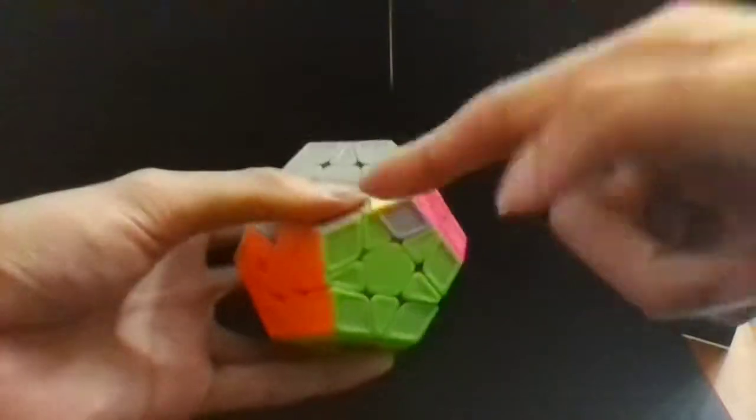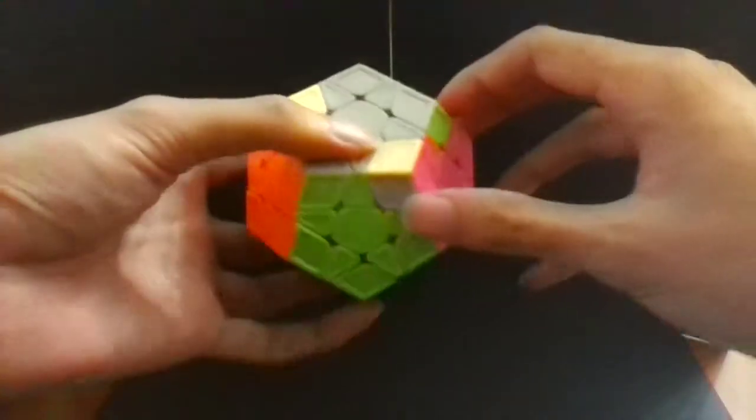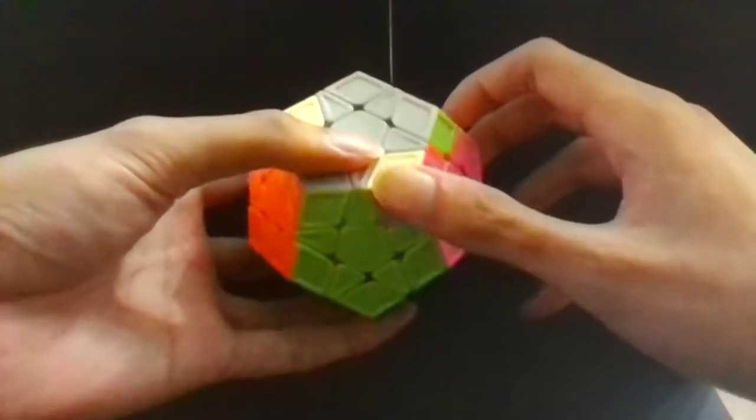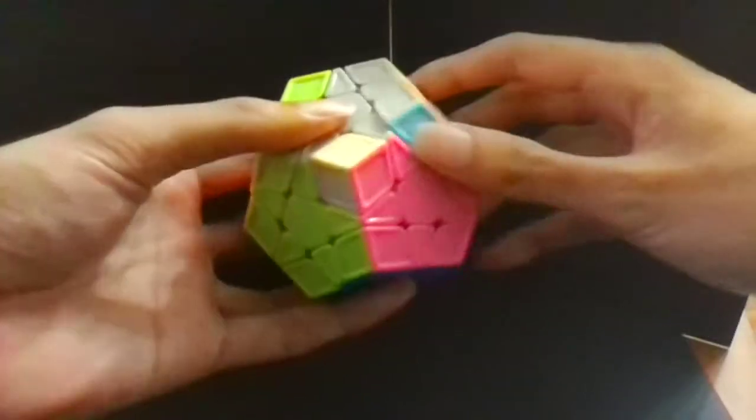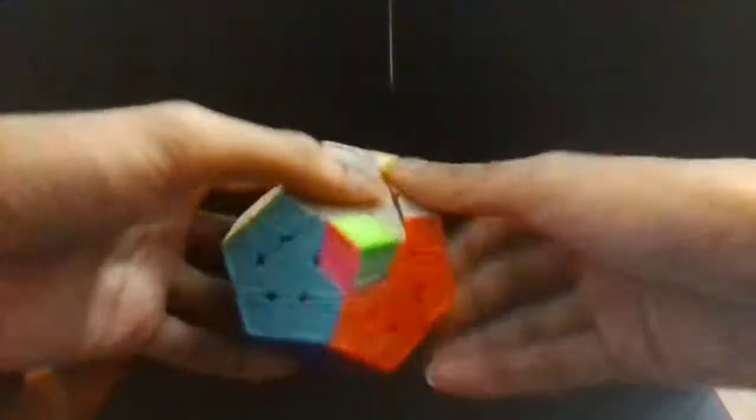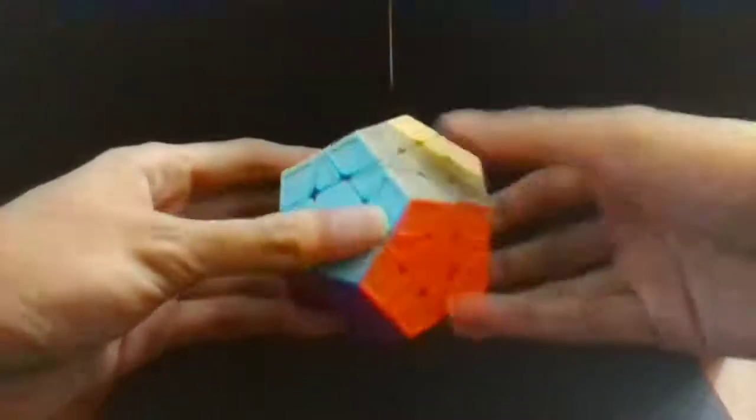So standard commutator stuff. And then we solve the last four corners using commutators as well. So we use a commutator to solve one corner and another commutator to solve the last three corners.